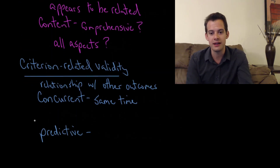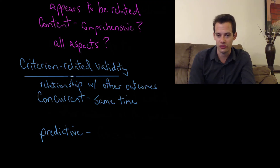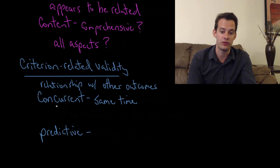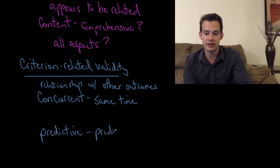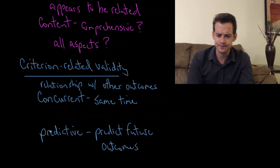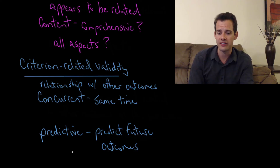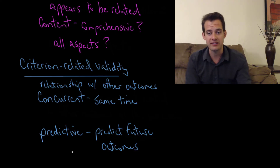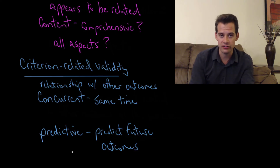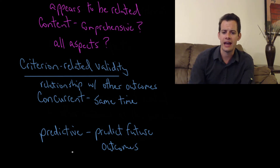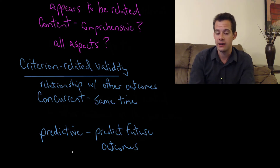Predictive validity is similar — it's also criterion-related validity — but it looks at other outcomes in the future. Can our test predict future outcomes? For example, does the IQ test you take at age 10 allow me to make predictions about your SAT score or college performance? There are behaviors associated with intelligence, like high SAT scores or high-level college performance, and predictive validity asks whether an IQ test taken at age 10 can predict those future outcomes.